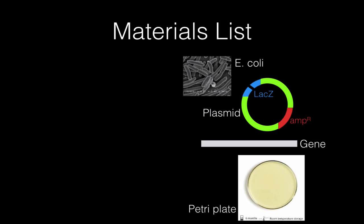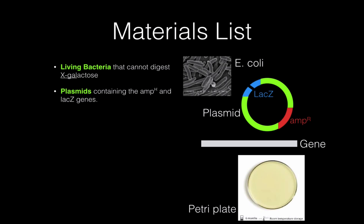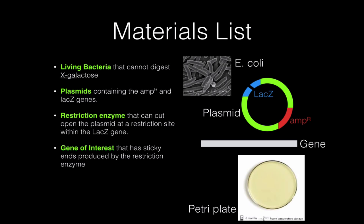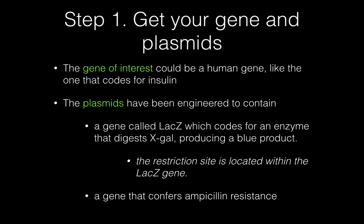The materials list for this lab includes E. coli bacteria that do not have the ability to digest a form of lactose called X-gal or X-galactose. You have plasmids engineered to contain the ampicillin resistance gene (colored red) and the LAC-Z gene (colored blue). You need a restriction enzyme that cuts at a restriction site in the middle of the LAC-Z gene, and your gene of interest (shown in white) with matching sticky ends. Finally, you need agar plates with nutrient media mixed with ampicillin and X-gal. If bacteria digest the X-gal, the breakdown products are bright blue.